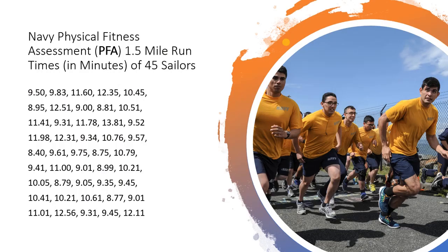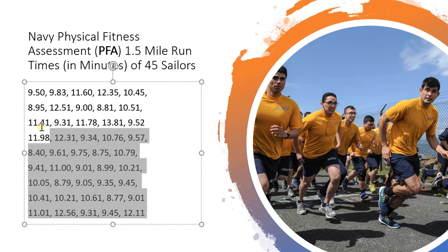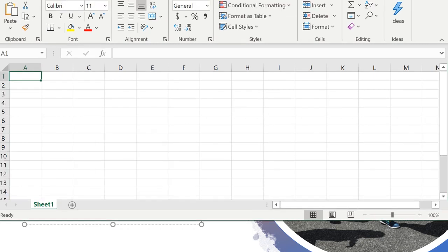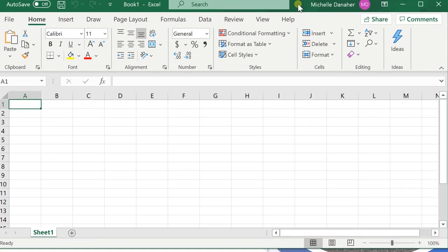Let's do this with an example. Suppose I have the 1.5 mile run times for 45 sailors in the U.S. Navy. So here's all their data. The first thing I want to do is highlight all this data and copy it into Excel. I'll highlight it and press Ctrl-C to copy it, then open an Excel book and paste it here.